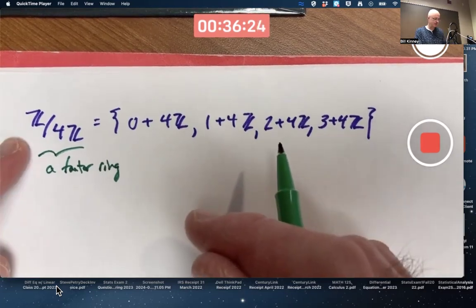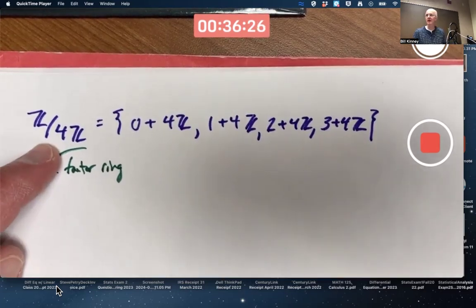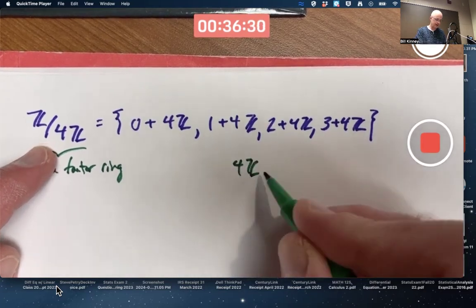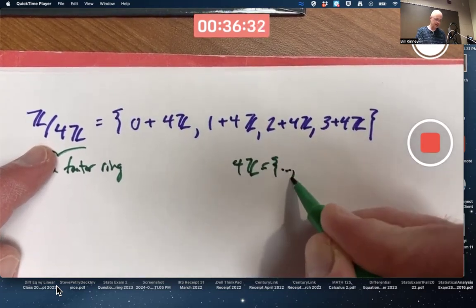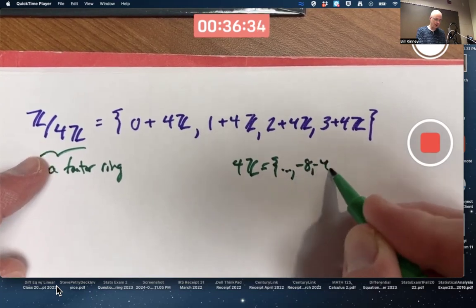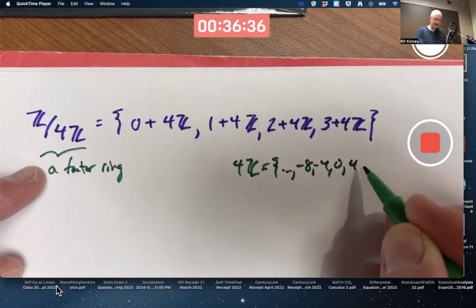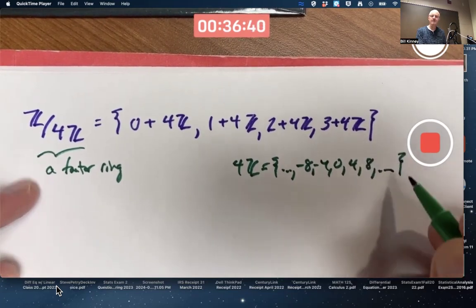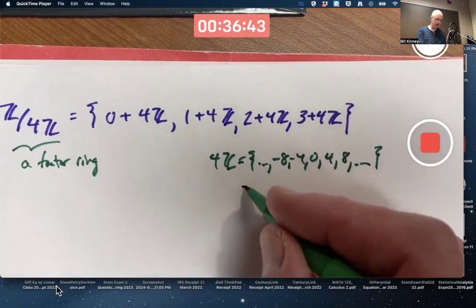Z is the integers. 4Z represents all the multiples of 4. 4Z consists of all multiples of 4, both as a cyclic subgroup generated by 4 of the integers, and also it is the principal ideal generated by 4.